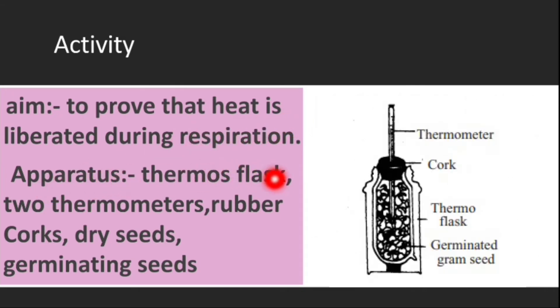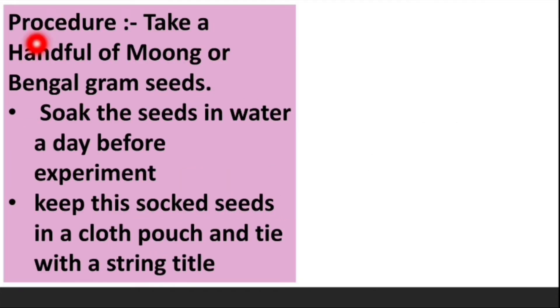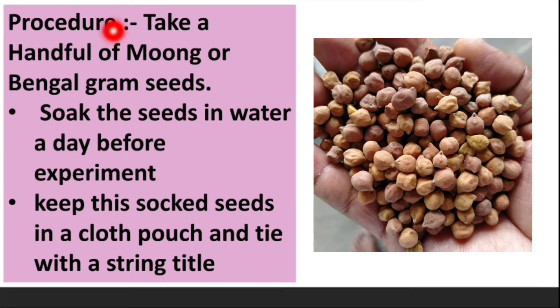Materials required: Thermos flask, 2 thermometers, rubber corks, dry seeds, and germinating seeds. Procedure: Take a handful of moong or Bengal gram seeds.